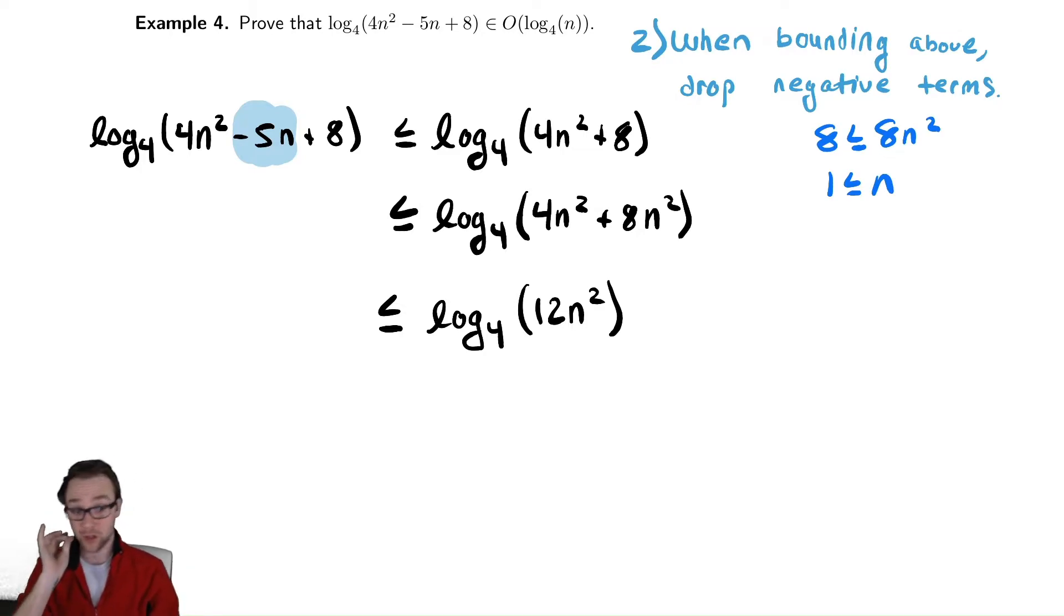I'm going to show you an alternative way that you could have approached this problem. Before, what we did is we split that log up and then used a bunch of log rules, then replaced some things and went through some more steps. There's actually a much faster way to do this, which is if you observe 12n squared is eventually less than or equal to n cubed. n cubed is a larger power of n, therefore it grows faster than n squared. If I do algebra here, we can see that verified. This is if I divide by n squared 12 less than or equal to n, or n greater than or equal to 12.